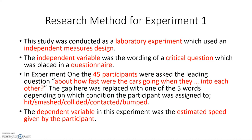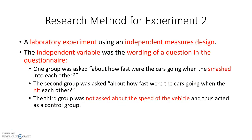The dependent variable in experiment one was the estimated speed given by the participant. For experiment two, a lab experiment was used with an independent measures design — the same as experiment one. The independent variable was the wording of a question in a questionnaire. One group was asked how fast the cars were going when they smashed into each other, the second group was asked when they hit each other, and the third group was not asked about speed and thus acted as a control group.